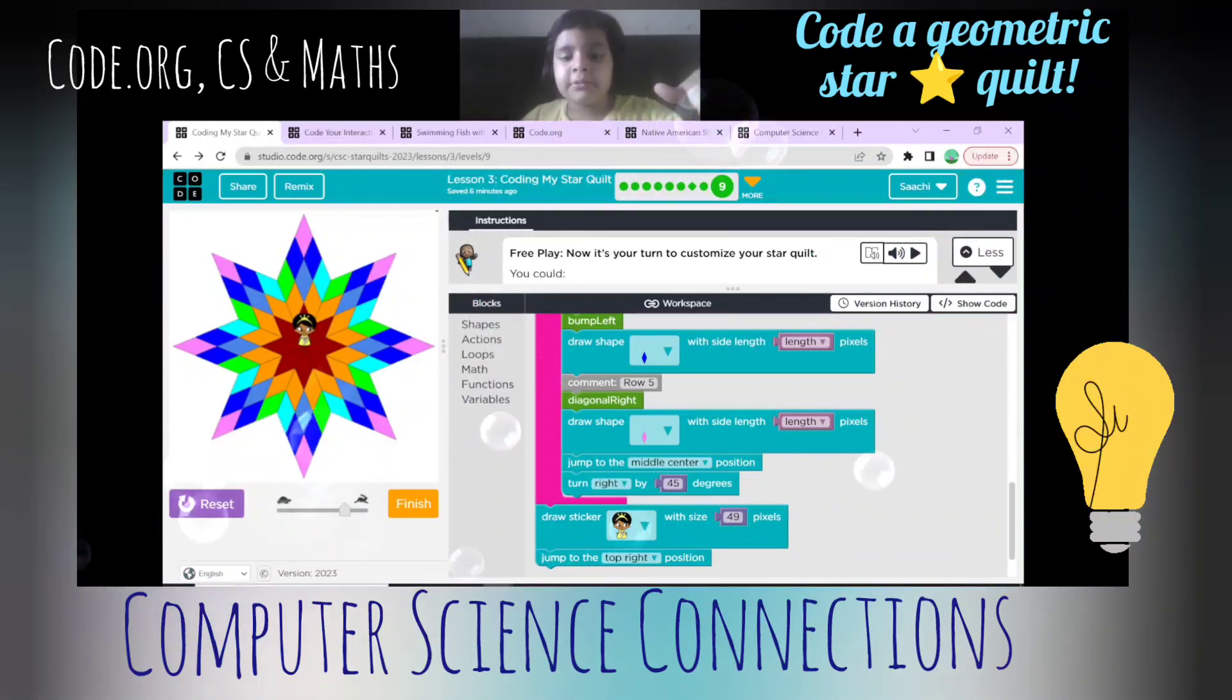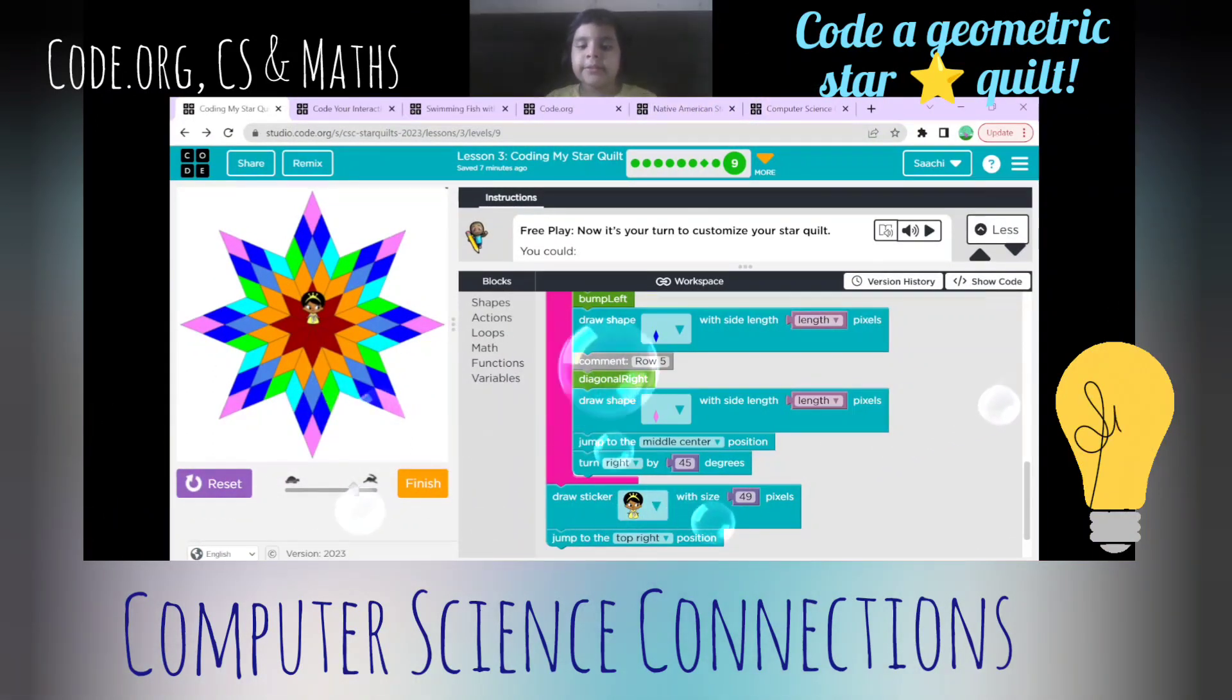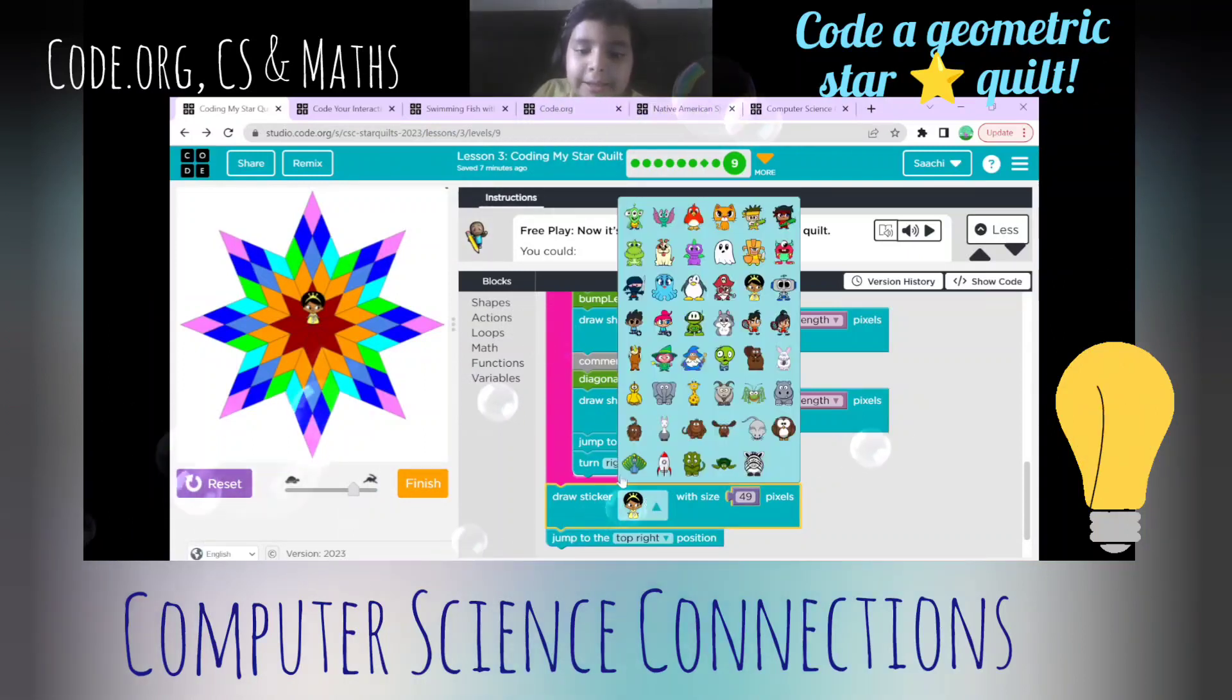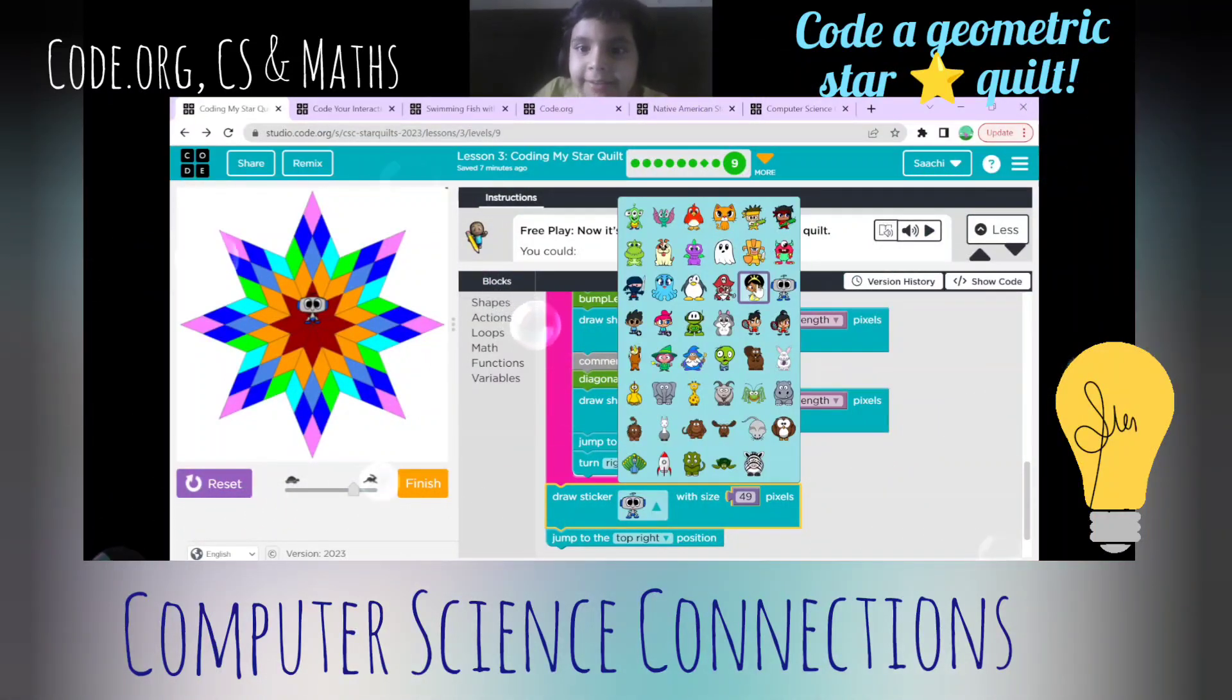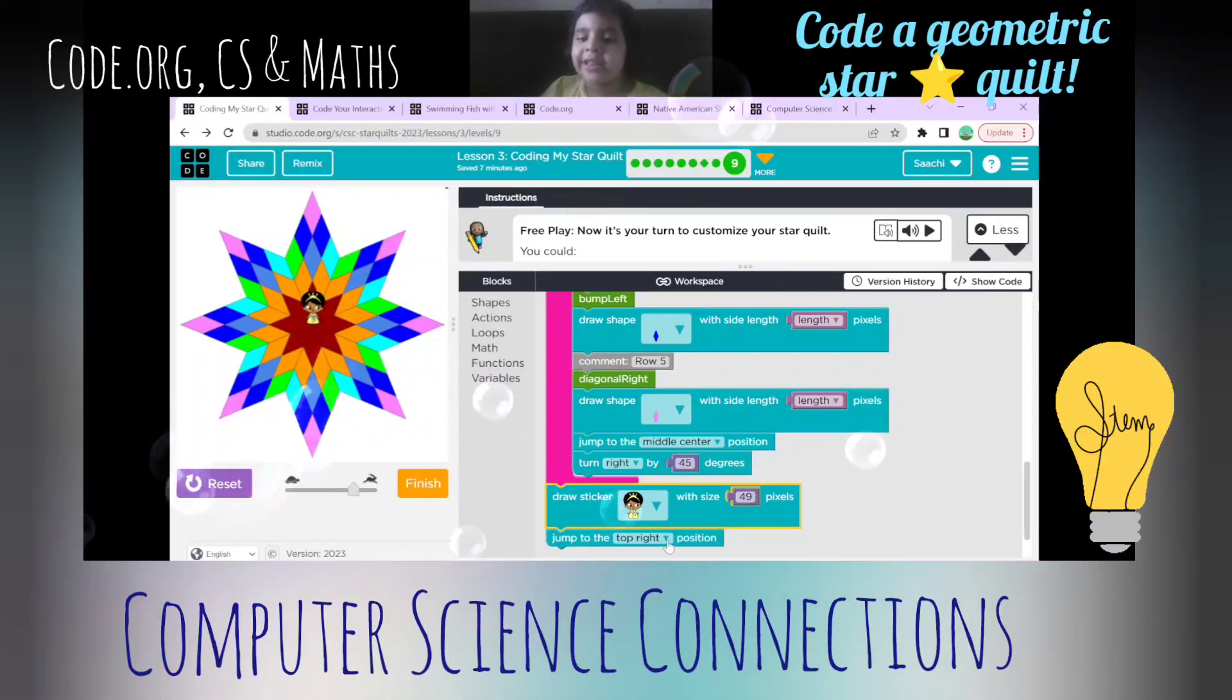Finally it will jump to the middle center and turn right by 45, and finally it will draw a sticker, a little princess by 45, 39 pixels. If you want, you can change the sticker to any one you want, like a little robo. But now let's keep it a little princess and finally jump to the top right position.